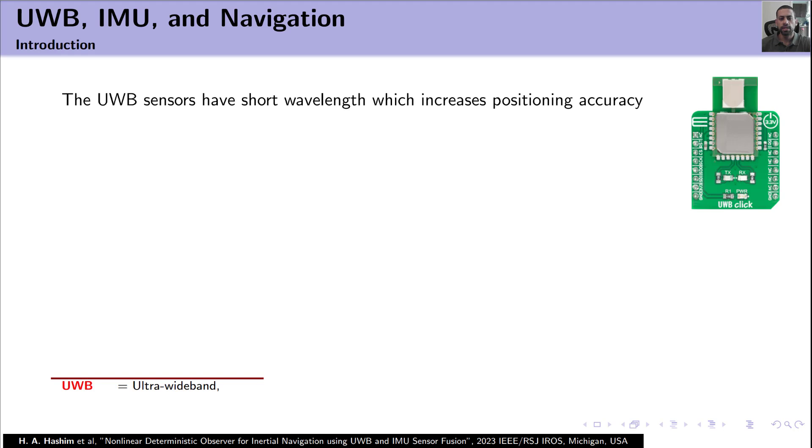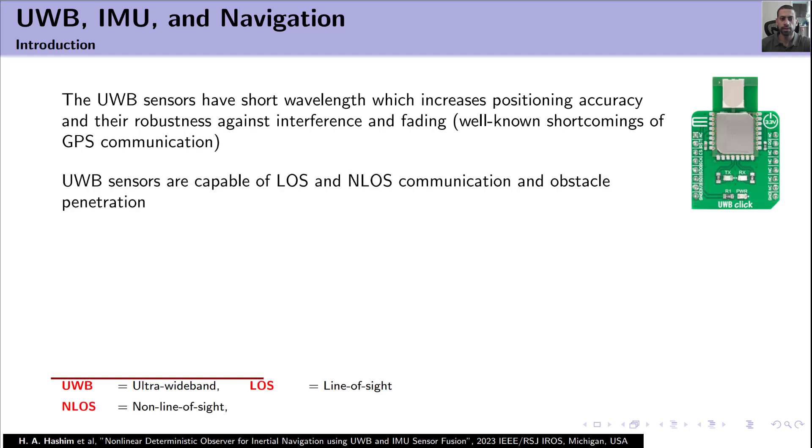The UWB sensors have short wavelengths and this increases the positioning accuracy and the robustness against interference, which is a common problem in GPS communication. Also, the UWB sensors are capable for line-of-sight or LOS and non-line-of-sight communication and have the ability for obstacle penetration. UWB technology is low in power consumption, compact, lightweight, and this ensures simplicity in implementation.